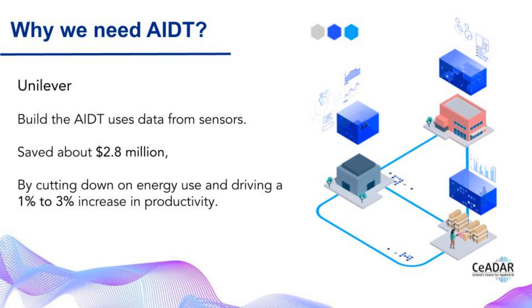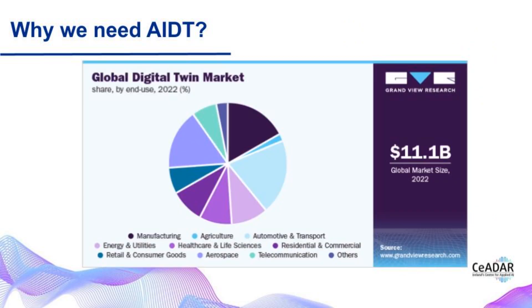This has already saved Unilever about $2.8 million, while driving a 1% to 3% increase in productivity. It's innovative technology that is a significant step toward creating a sustainable future. According to the chart from Grand View Research, digital twin technology is booming in every industry, with the automotive and transportation sectors leading the pack, accounting for over 20% of total revenue in 2022, thanks to the popularity of digital twin technology adoption.